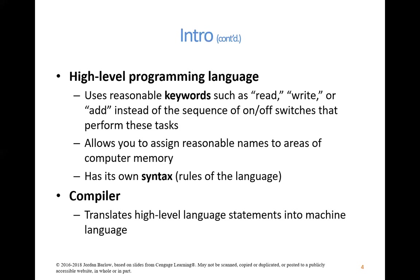Another key word to be familiar with is a compiler. A compiler is a piece of software that translates high-level language statements, such as those we use in C-Sharp, into machine language — the binary that the computer can actually understand. We're going to learn how to write the language using the correct syntax, and also how to use a compiler to translate that language into something the computer can actually do.